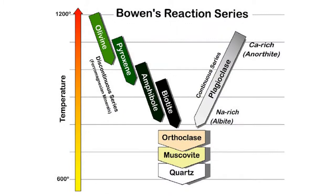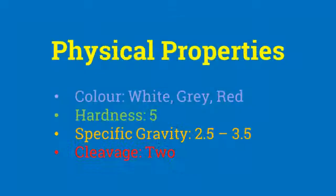Feldspar is also a part of Bowen's reaction series. Crystallization of Feldspar happens as a continuous series during the cooling of magma. Feldspar are white, grey, or red in color. Their hardness is 6 on the Mohs scale and their specific gravity ranges from 2.5 to 3.5.